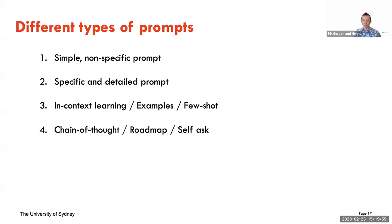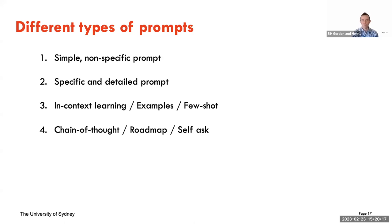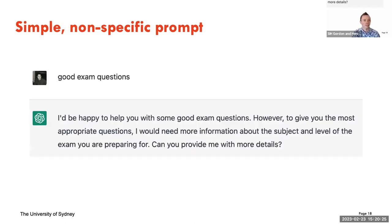So how do you talk to these models? There are different ways. You can give it a simple non-specific prompt, you can add more detail, you can add examples of previous questions that have been answered correctly so it knows how to answer the next one, and you can even get it to ask itself questions and explain its working. These are different levels of prompt engineering to get the right answer back.